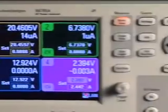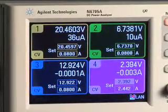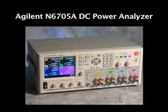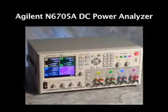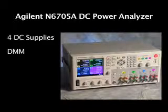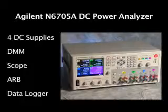Agilent Technologies has developed the DC Power Analyzer, which is a new category of test equipment for R&D work. The Agilent N6705A DC Power Analyzer is a highly integrated instrument that combines up to four advanced DC power supplies, DMM, oscilloscope, arbitrary waveform generator, and data logger.